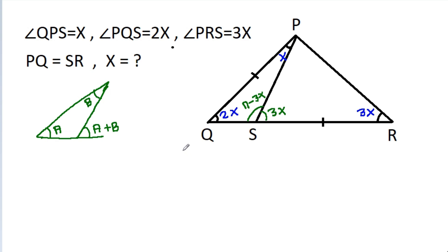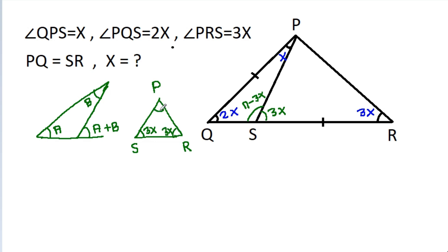And again, in triangle PSR, this angle is 3x and this angle is also 3x, so this angle will be pi minus 6x.